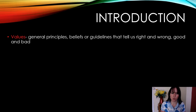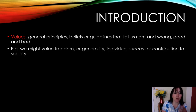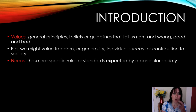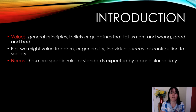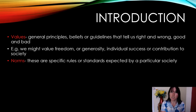Values are the general principles, beliefs or guidelines that tell us right and wrong, good and bad — for example, we might value freedom or generosity, individual success or contribution to society. Norms are the specific rules and standards expected by a particular society. Values are things that are important; norms are what is the norm. Don't forget when we looked at deviance in Unit 1 — deviance is where the norms are broken.